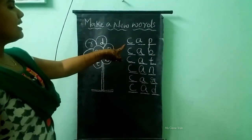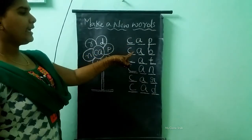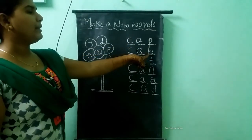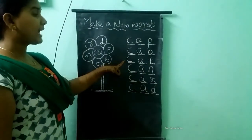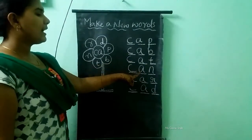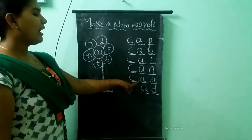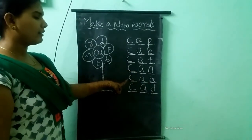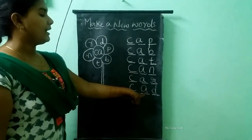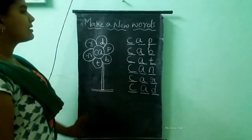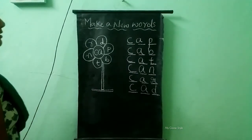Let's see: C A N, Can. C A R, Car. C A D, Cad. Cat. This is how we need to make a new word. Thank you.